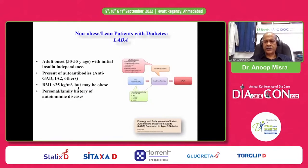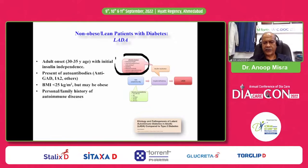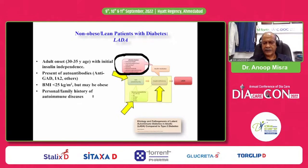Let's look at each entity separately. LADA has onset at around 30 to 35 years of age with initial insulin independence, presence of antibodies, BMI less than 25, and personal or family history of autoimmune disease. The factors which may incite remain similar to type 2 diabetes — excessive weight, smoking, physical inactivity — but most important is genetic susceptibility, islet cell autoimmunity, and subsequently insulin deficiency. These patients slowly progress to insulin dependence.